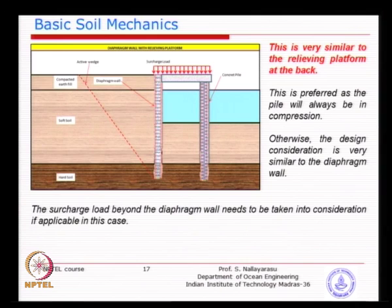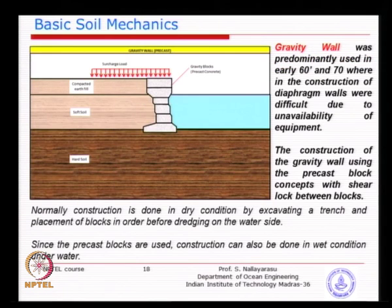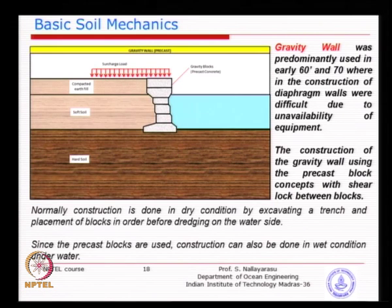In some cases, the pile is in front and the wall is at the back - again depending on the situation. There is also the anchor block versus gravity type. Gravity type is similar - the stability is obtained by its own weight, provided the soil and ground conditions permit, because otherwise it will not work.